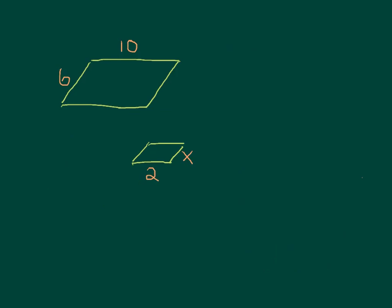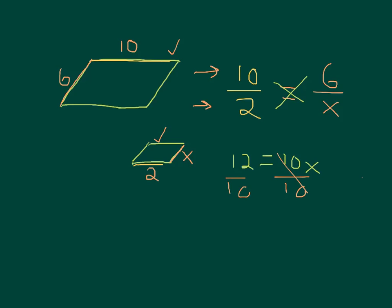This time we have 2 parallelograms instead of triangles, but the same idea applies. Let's look at our corresponding sides. We have 10 and we have 2, so you can set that up as 10 over 2. And then 6 corresponds to X, so we have 6 over X. Double check: numerator, they both came from the same figure; denominator, they both came from the same figure. So now we can cross multiply. 6 times 2 is 12 equals 10 times X. So divide both sides by 10, and you'll get that X equals 1.2.